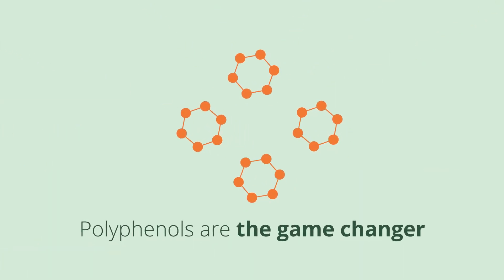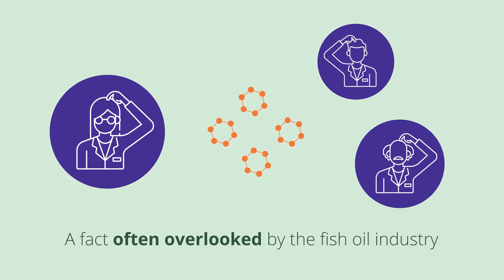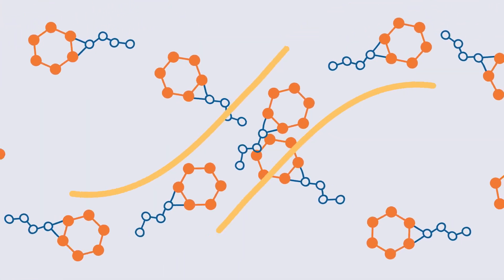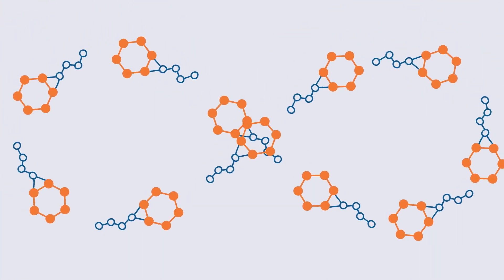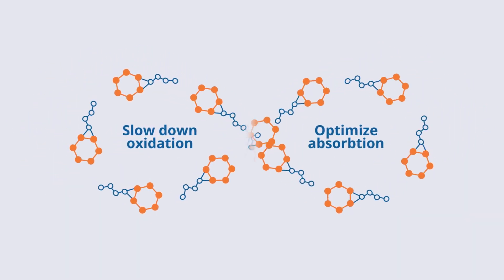Polyphenols are the game-changer. This is a fact often overlooked by the fish oil industry. These natural antioxidants are commonly found in seafood, nuts, and seeds. Polyphenols are powerful micronutrients working in synergy with omega-3s to slow down oxidation and optimize absorption.